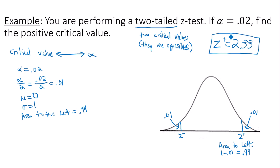Well, remember what I said at the beginning? I said two-tailed tests have two critical values. They are opposites of each other. So if my positive critical value is 2.33, my negative critical value should be negative 2.33.